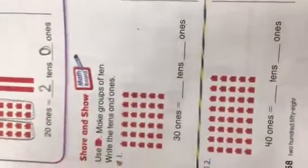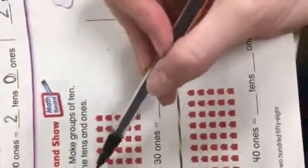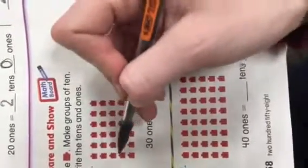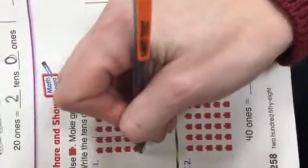Let's go ahead and try this one down here. It says make groups of tens, then write the tens and the ones. Right here we can count. It says there's thirty ones is equal to what? So we can count one, two, three, four, five, six, seven, eight, nine, ten. Circle the first group.